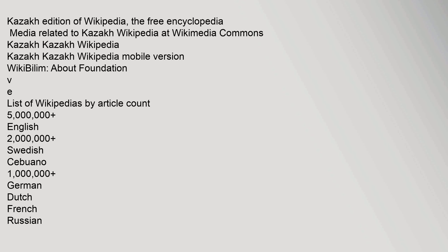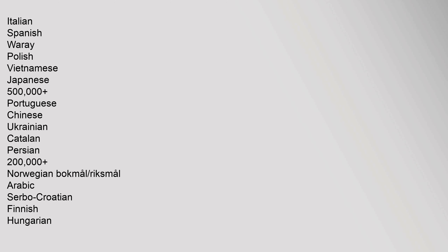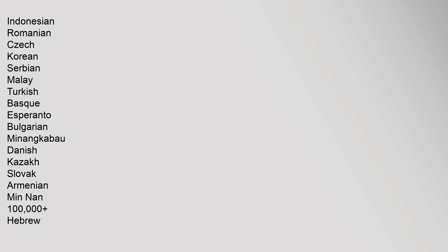Kazakh edition of Wikipedia, The Free Encyclopedia. Media related to Kazakh Wikipedia at Wikimedia Commons. List of Wikipedias by Article Count: 5 million — English; 2 million — Swedish, Cebuano; 1 million — German, Dutch, French, Russian, Italian, Spanish, Waray, Polish, Vietnamese, Japanese; 500,000 — Portuguese, Chinese, Ukrainian, Catalan, Persian; 200,000 — Norwegian Bokmål, Riksmål, Arabic, Serbo-Croatian, Finnish, Hungarian.